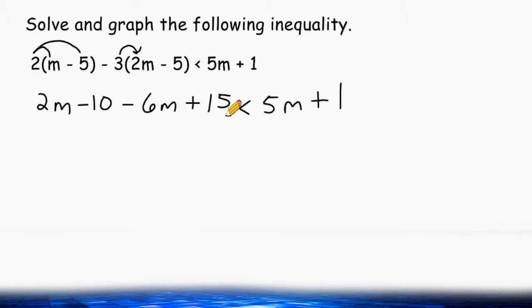Now we are going to simplify this side of our inequality a bit further. We can start by combining the like terms of 2m and minus 6m. If we consider this 2m a positive value and this 6m a negative value, we have 4 more negatives than we do positives. So when combining 2m and negative 6m, that would leave us with negative 4m.